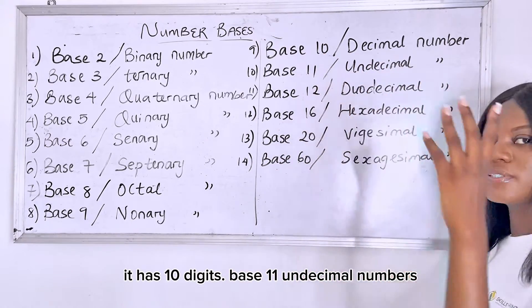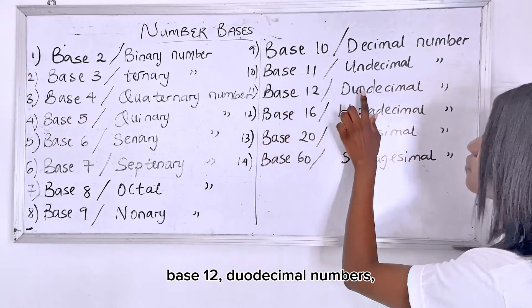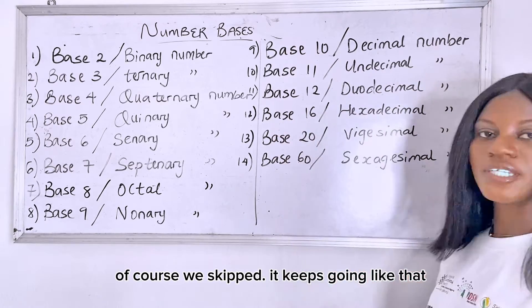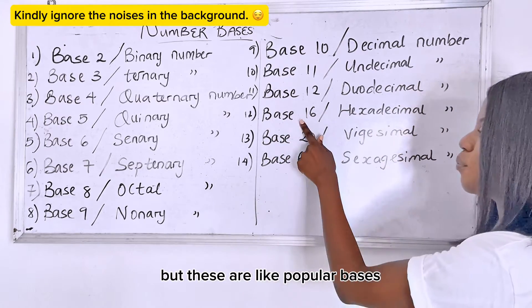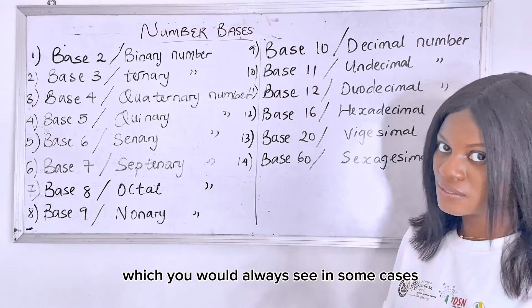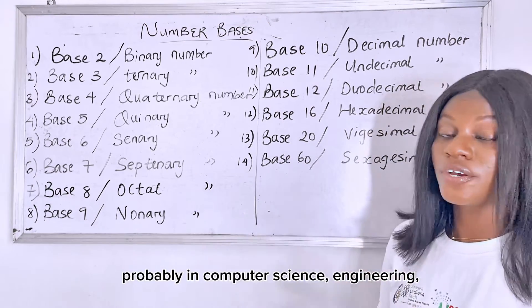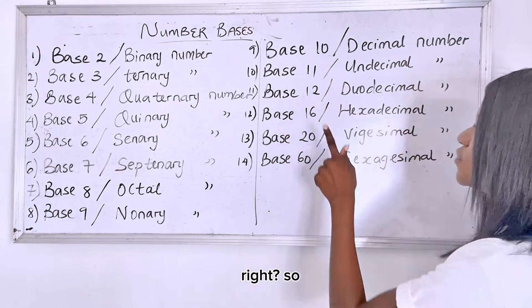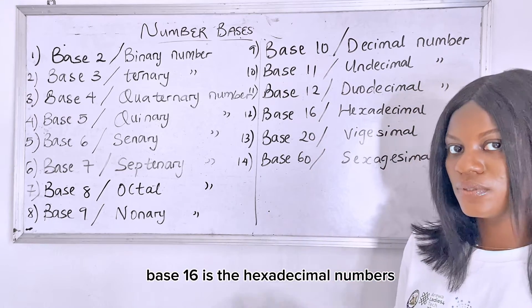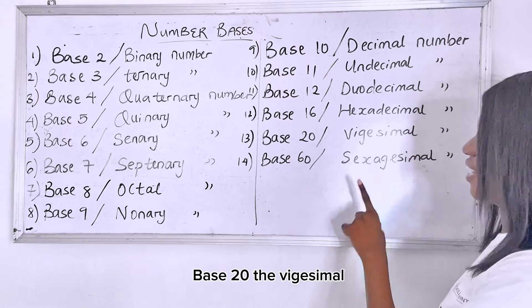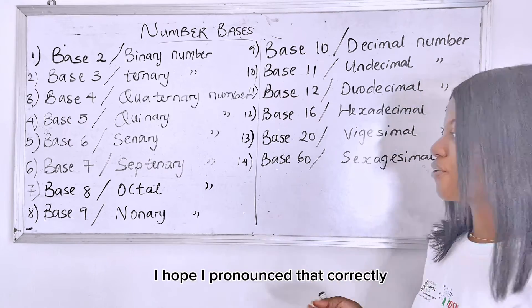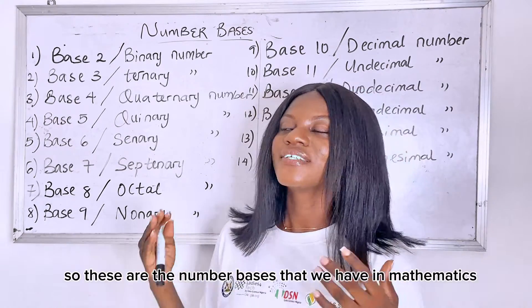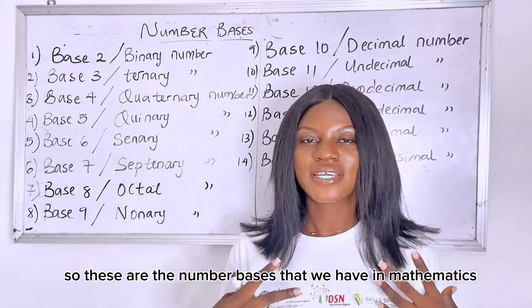Base 11, undecimal numbers — these are numbers with 11 digits. Base 12, duodecimal numbers — these are numbers with 12 digits. Base 16, and of course we skipped some. But these are the popular bases which you would always see, probably in computer science, engineering, whatever the case may be. So base 16 is the hexadecimal number, numbers with 16 digits. Base 20, the vigesimal. And the hexadecimal number — so these are the number bases that we have in mathematics.